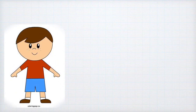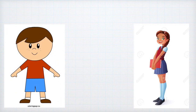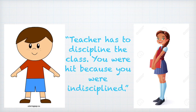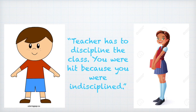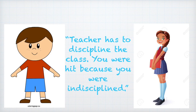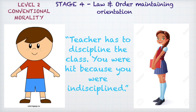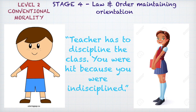A senior girl, a 7th grader, comes to Ben and tells him that the teacher has to discipline the class and that he was hit because he was indisciplined. This response falls under Stage 4, the social order-maintaining orientation, within Level 2 conventional morality. At this stage, morality is primarily guided by an orientation towards maintaining social order.